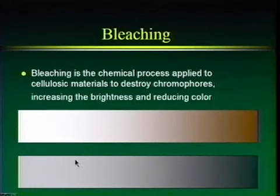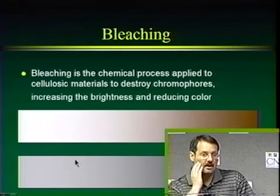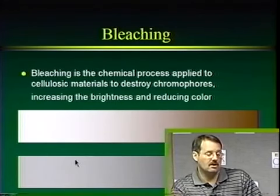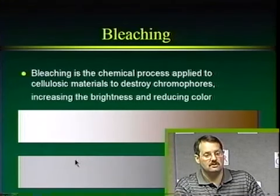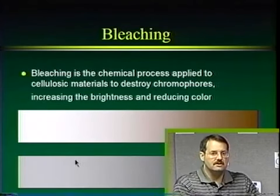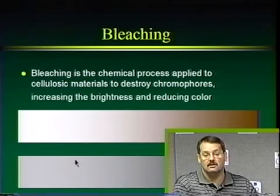We're going to continue today our course on paper recycling, and the topic for today is bleaching, which is a very integral part of paper recycling. Bleaching is a chemical process applied to cellulosic materials to destroy chromophores. Chromophores are chemical structures that cause color — they absorb light and make things look dark. With bleaching, we'll destroy these chromophores, which will increase the brightness of our pulp and reduce color.